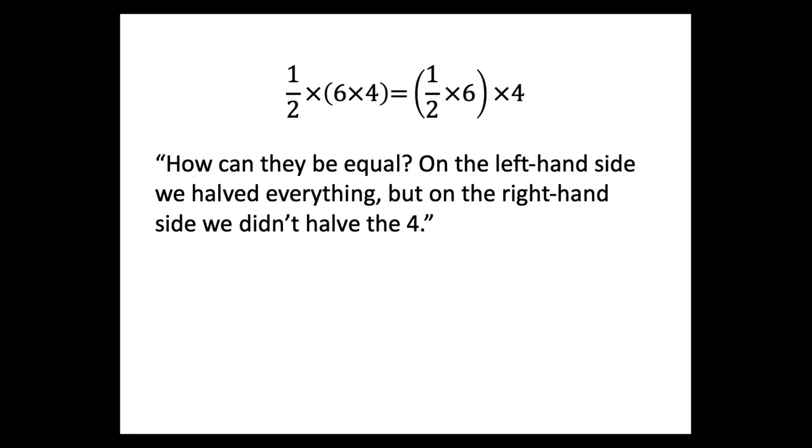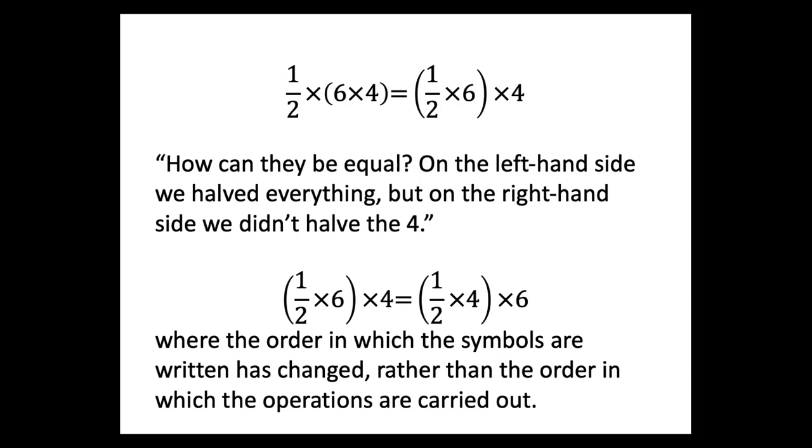They might say, even if you'd asked them to do the calculations and see if it makes a difference, they might be quite surprised. They might say, how can these be equal? On the left-hand side, you're dividing everything. And on the right-hand side, it's just the six. And we didn't half the four. So how can they possibly be equal? Or you could think of it this way, where you've changed the order and you're saying, if I halve the six and multiply by four, that's the same as halving the four and multiplying by six. Why should that be? So these are potentially quite puzzling things for students.